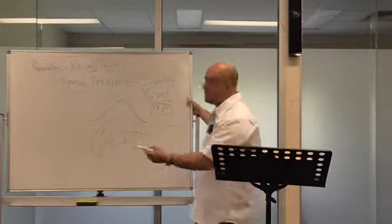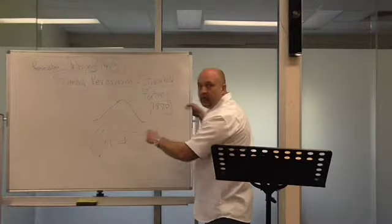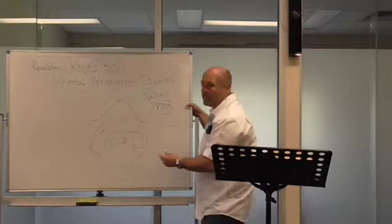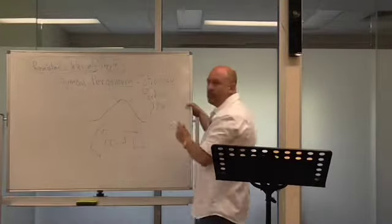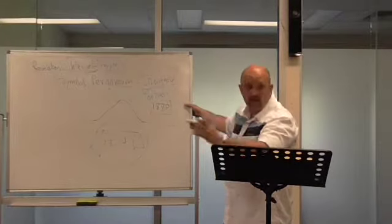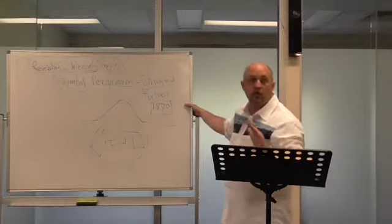Which, by the way, if you haven't picked it up, this is the throne of Satan that they're talking about. He moves the whole temple of Zeus from Pergamum, which is in Turkey, into Berlin, Germany.